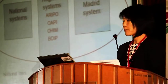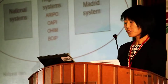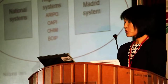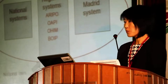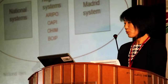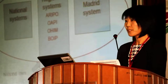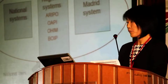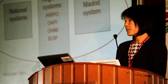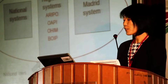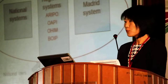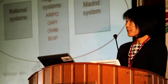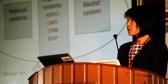Moving on to trademark, similarly we have national systems and regional systems. With respect to regional systems, there are four regional offices: two in Africa — ARIPO and OAPI. OHIM is an office covering the countries of the European Union. And then the BOIP, Benelux Office of Intellectual Property, covers the Netherlands, Belgium, and Luxembourg.